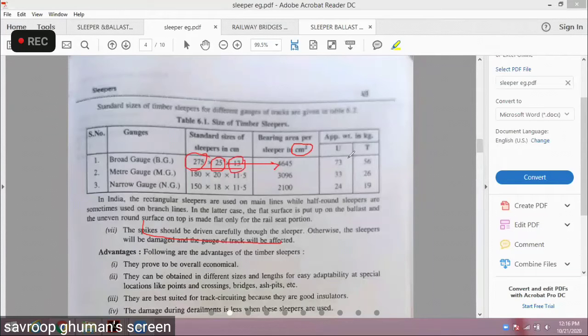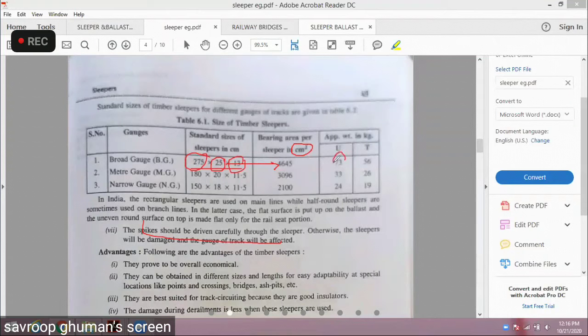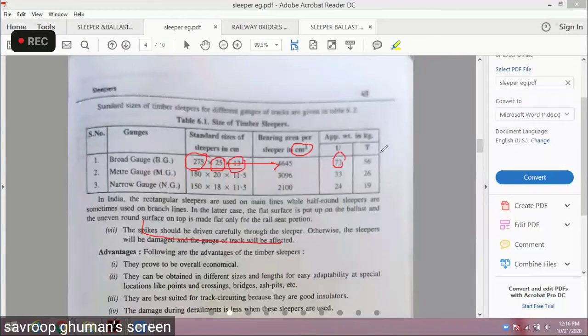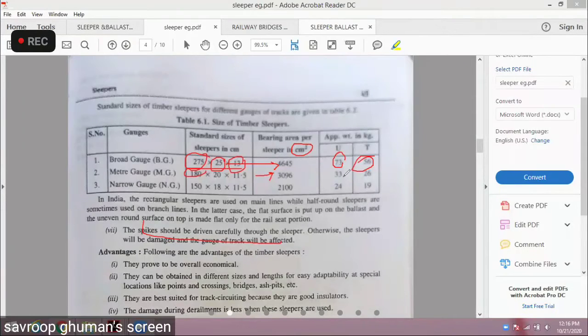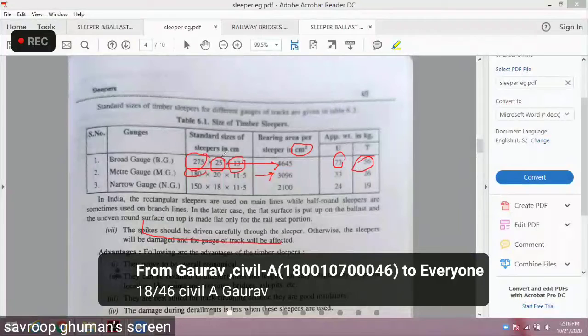The bearing area is 4645 centimeter square, untreated weight is 73 kg, and the treated one should be 56 kg. And further, the dimensions are about 20 cm into 11.5 cm, and the area should be total 3096 cm square. Again, untreated or treated, the weight should be 33 kg in the meter gauge.